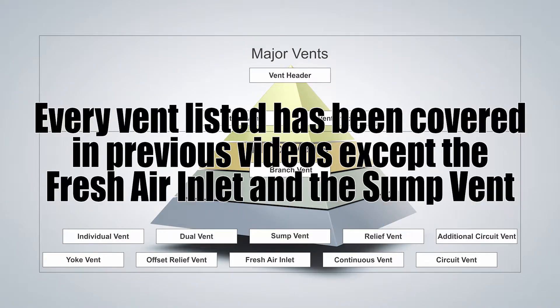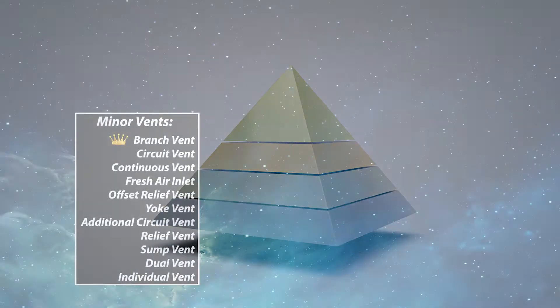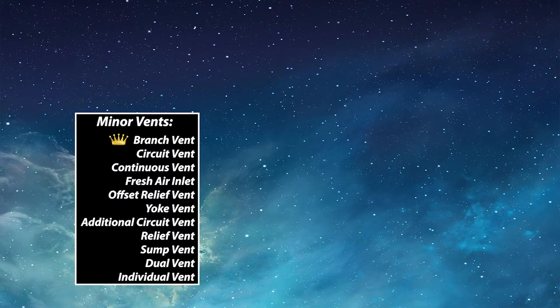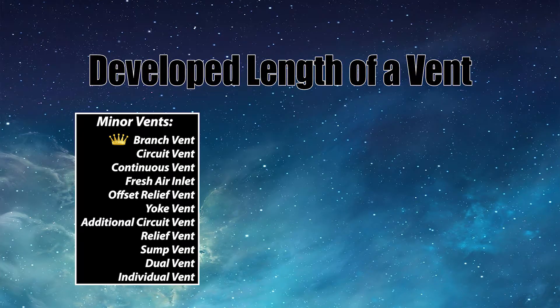In this video I'm not going to go into any details as to what these actually look like and what makes them the different vent names. I've already made videos on every single one of them except for the fresh air inlet, which is a fourth year topic that comes down in minor vents. The first thing I want to do is look at minor vents in respect to developed length.